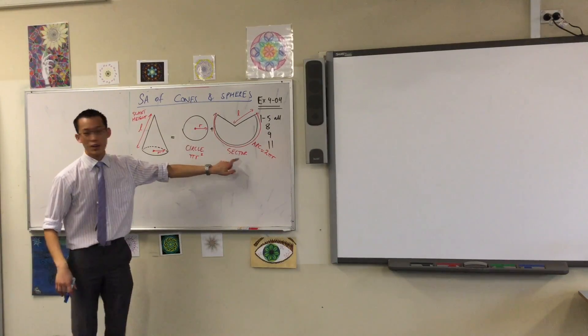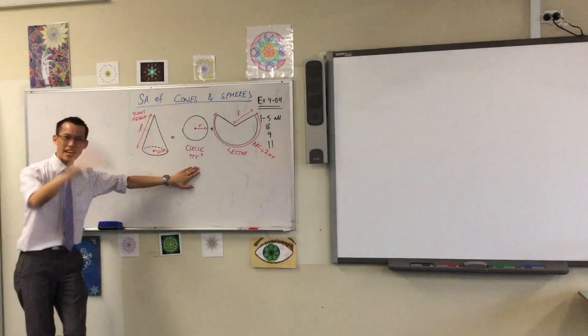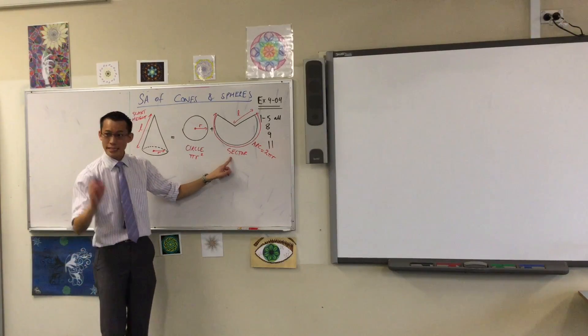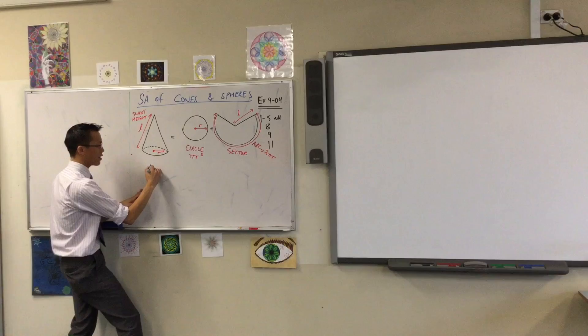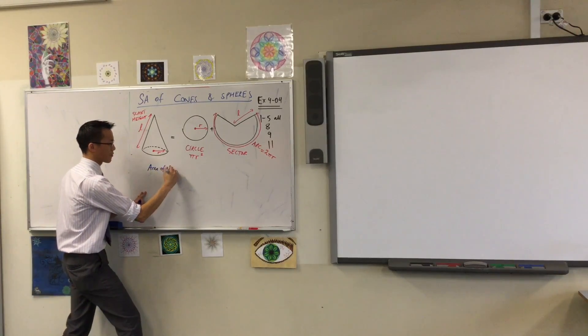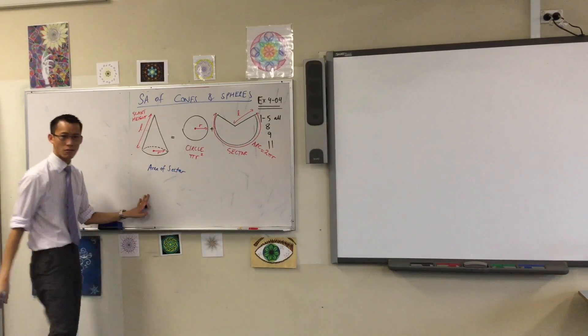What I'm trying to work out and remember is the area of this sector. I know the area of the circle, that's the easy bit. This part takes a little more work. So what I want to do is say, well the area of the sector...